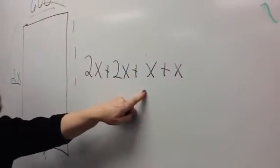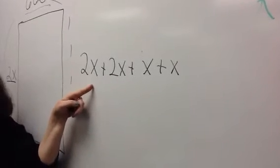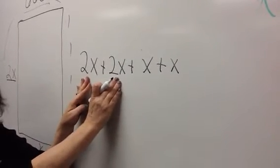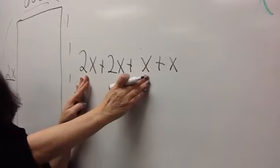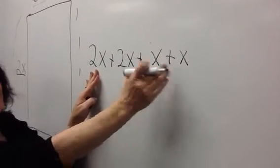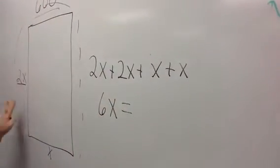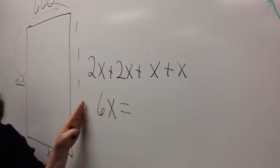If we combine the x's, what do I have? Okay, these two are 4x, then 5x, and 6x. Okay, 6x, and what are all the sides going to add up to? 600.